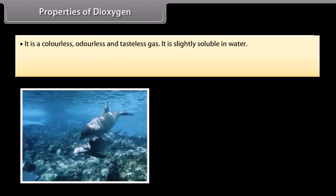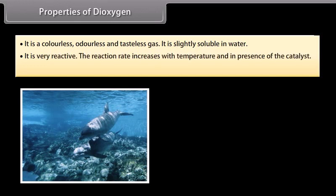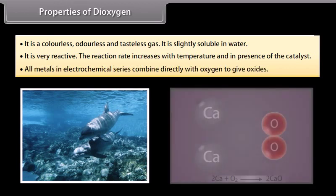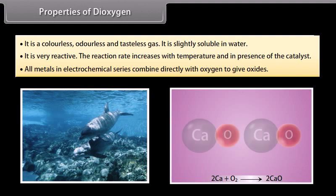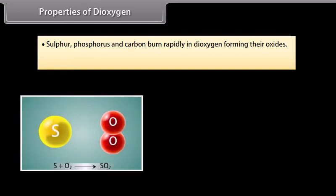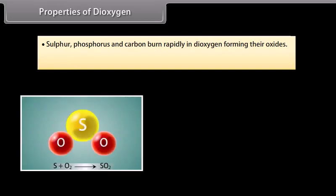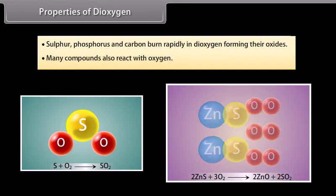Properties of dioxygen. It is a colourless, odourless and tasteless gas. It is slightly soluble in water which gives vital support to marine and aquatic life. It is very reactive. The reaction rate increases with temperature and in presence of the catalyst. All metals in electrochemical series combine directly with oxygen to give oxides. Sulphur, phosphorus and carbon burn rapidly in dioxygen forming their oxides. Many compounds also react with oxygen.